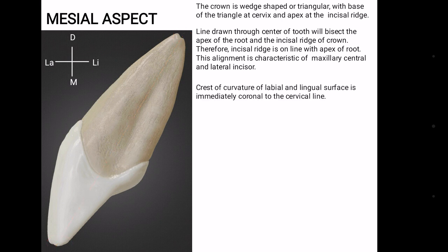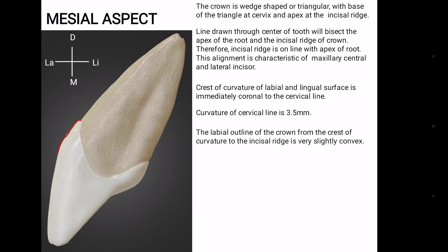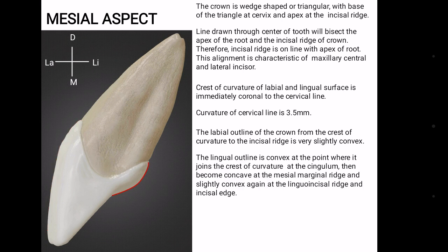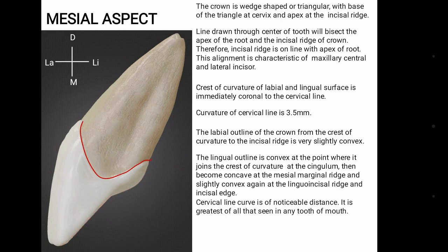Crest of curvature of labial and lingual surfaces is immediately coronal to the cervical line. Cervical line curvature is 3.5 mm. Labial outline of the crown from crest of curvature to incisal ridge is very slightly convex and lingual outline is convex at the crest of curvature, then becomes concave at mesial marginal ridge, then again slightly convex at incisal edge and linguoincisal ridge. Cervical line curve is noticeable and it is the highest of all seen in the oral cavity.